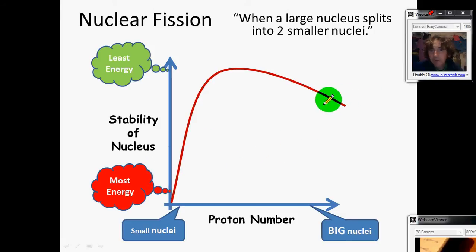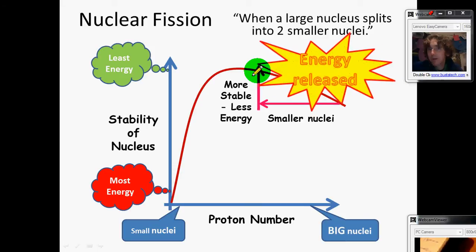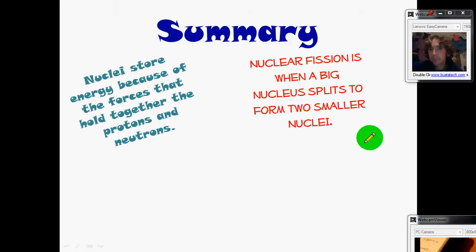Back on the graph, we've gone from a very, very big nucleus down here and it's split up into two smaller nuclei, which means that the energy is now more stable—it's got less energy. We've got a difference in the amount of energy we had here and the amount of energy we've got here. That energy then gets released. That's the energy that's released, for example, in a nuclear power station. Stick that into your summary: nuclear fission is about a big nucleus splitting up.